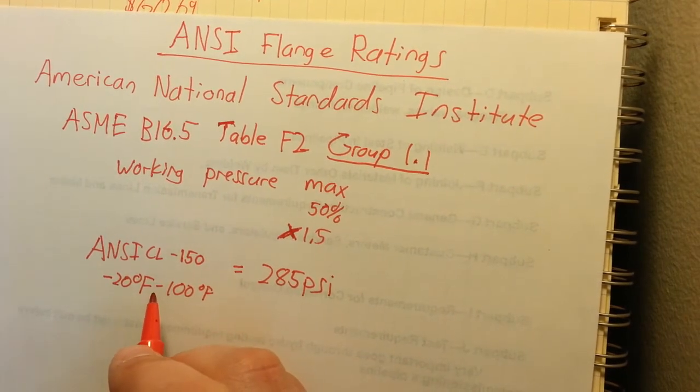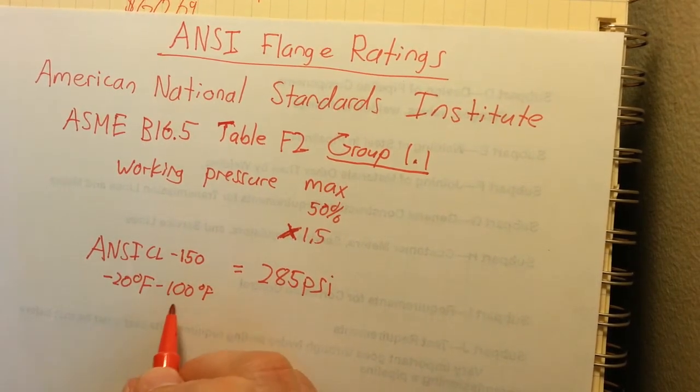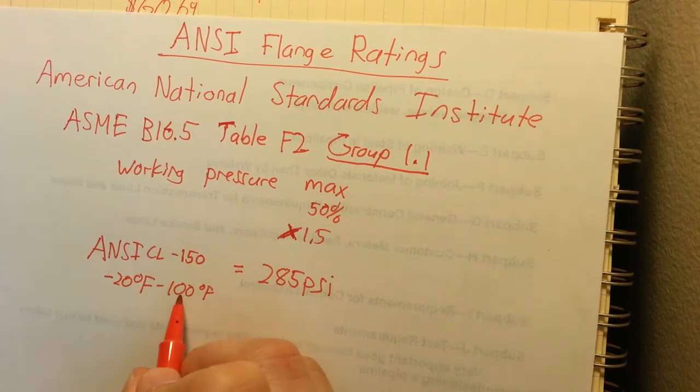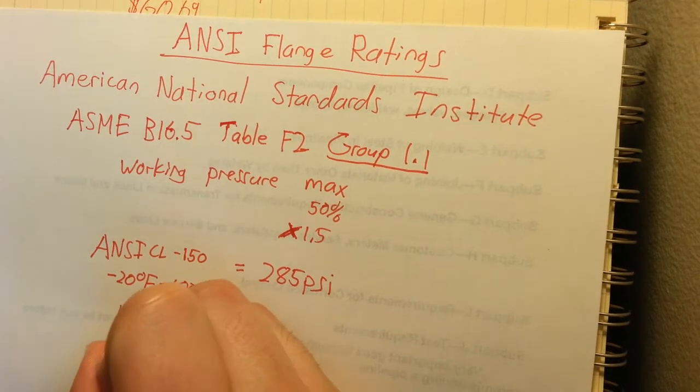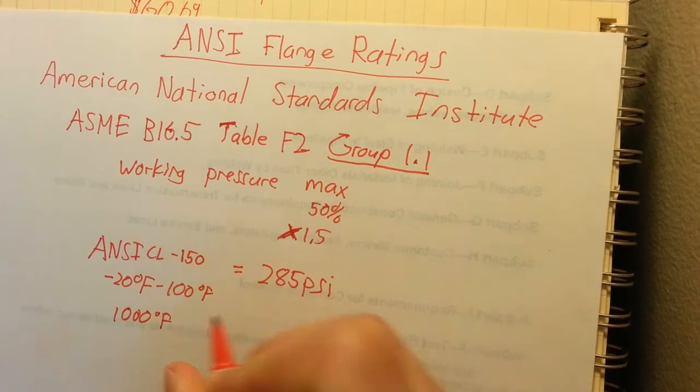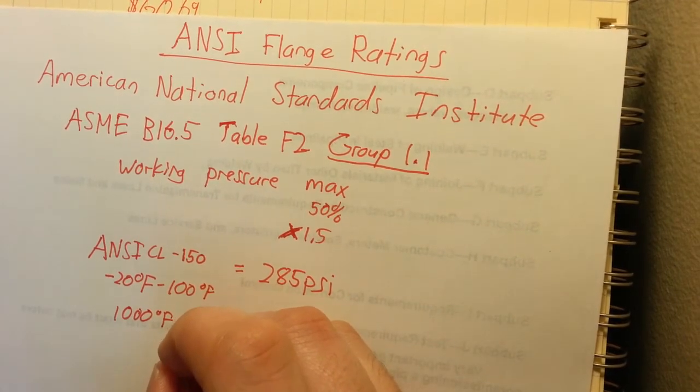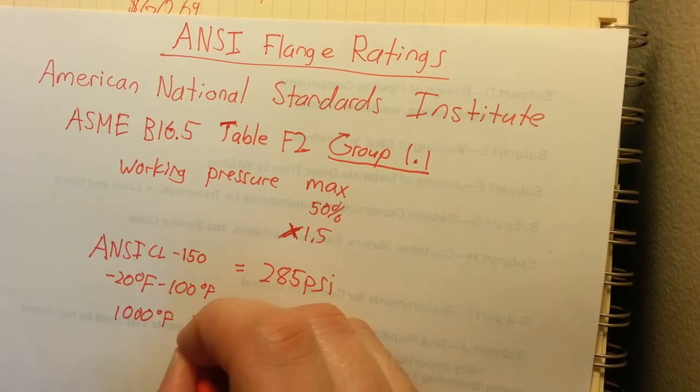The chart has different temperature ranges. So as you increase in temperature, it's going to derate the flange. So a flange at 1000 degrees Fahrenheit, the working pressure for that is only 20 PSI.